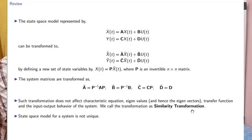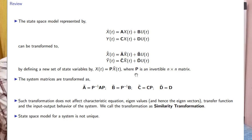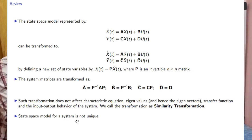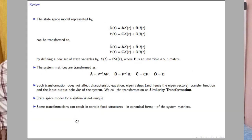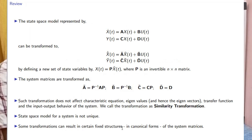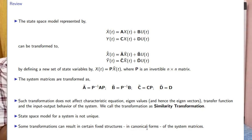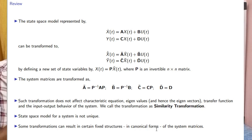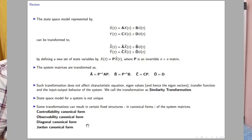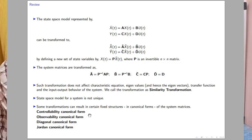This transformation gives a new state space model with matrices A-bar, B-bar, C-bar, and D-bar. Importantly, this transformation does not affect the characteristic equation, eigenvalues, eigenvectors, transfer function, or input-output behavior of the system. This is the invariance property. We call it similarity transformation because the original model is similar to the transformed model.